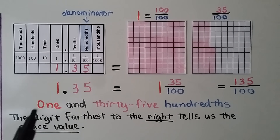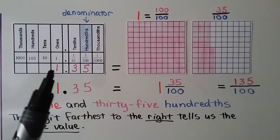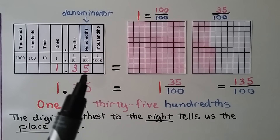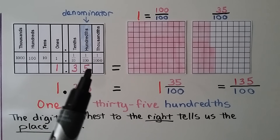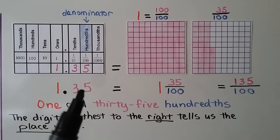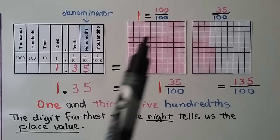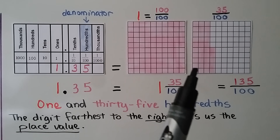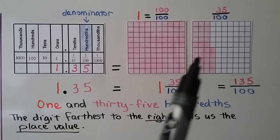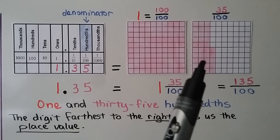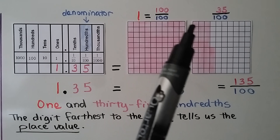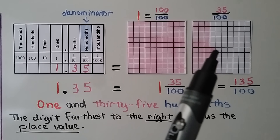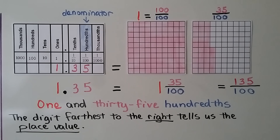Here we have a place value chart showing a 1 in the ones place, a 3 in the tenths place, and a 5 in the hundredths place. We have 1 and 35 hundredths. We have 1 whole, and then 35 filled in here out of 100. We can count by tens — 10, 20, 30 — then 31, 32, 33, 34, 35. There are 35 shaded out of 100.